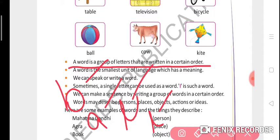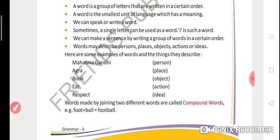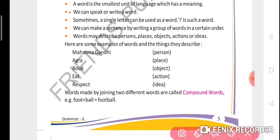So it is a group of letters that are written in a certain order. A word is the smallest unit of language which has meaning. A word is the smallest unit of language.